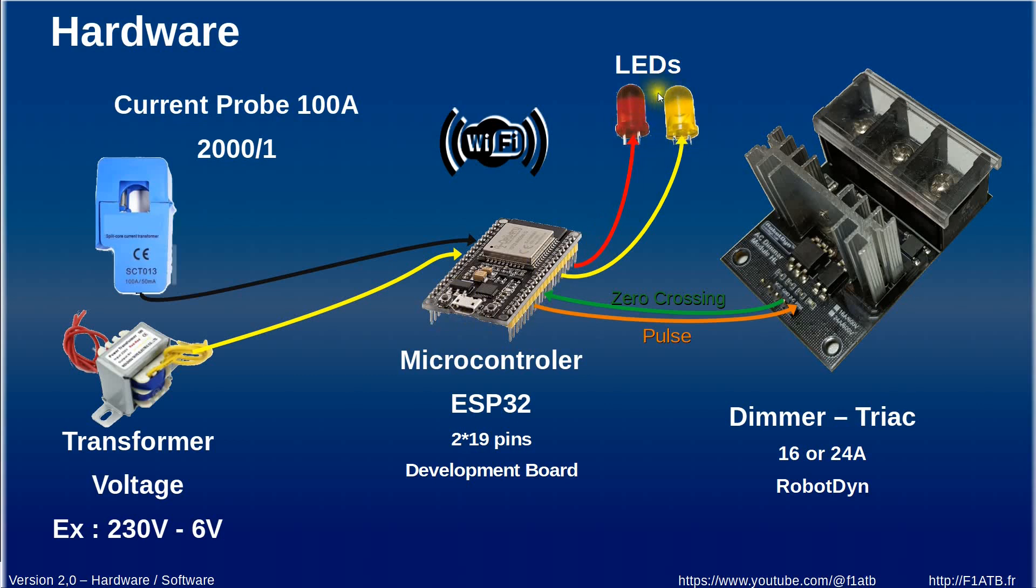for example here we can connect some LEDs you know the red LED for example when we consume power, yellow LED or green LED when we produce power and with this microcontroller we will control this dimmer which is based on the triac this is a key point of this system because this dimmer will allow us to inject energy to the water heater exactly the excess of energy we have available not more